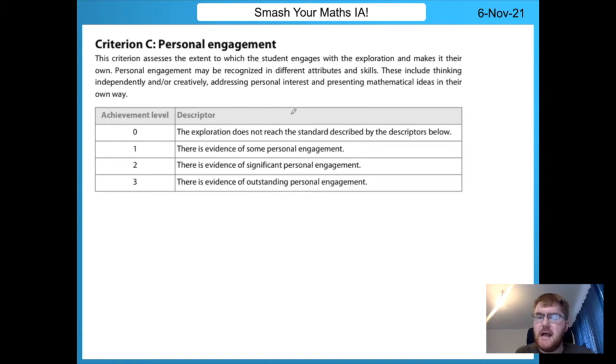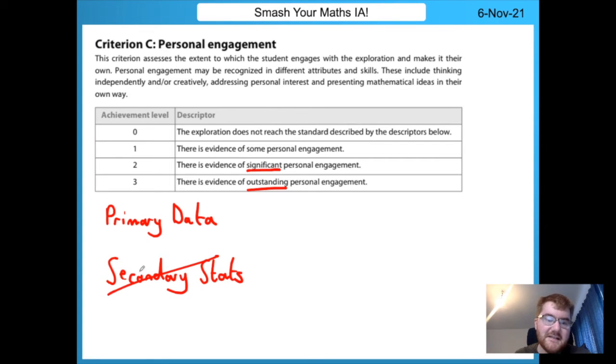Criterion C is personal engagement. In order to get the higher levels of significant outstanding personal engagement, you need primary data. One of the worst things you can do on your maths IA is to have a secondary data statistic where you find a source of data from somewhere and then try and do some analysis on this. We don't want to see that. What we want to see is collecting some primary data, maybe finding two variables that you think are correlated, collect that data. You can talk about sample size and what's a relevant sample size there, whether stratified sampling, quota sampling, et cetera, and then analyzing that data with maths you've used on the standard level, high level content. Secondary stats IAs: avoid, avoid, avoid. That's the most important thing with personal engagement.